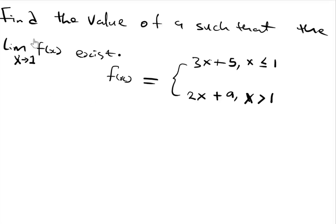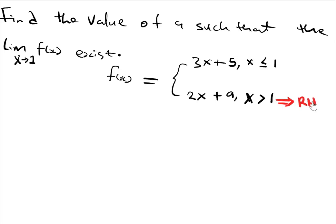In this question we are asked to find the value of 'a' at which this limit exists. The function f(x) is defined with the condition: one expression for x less than or equal to 1, and another for x greater than 1. For x greater than 1 we use the right hand limit, and for x less than or equal to 1 we use the left hand limit.